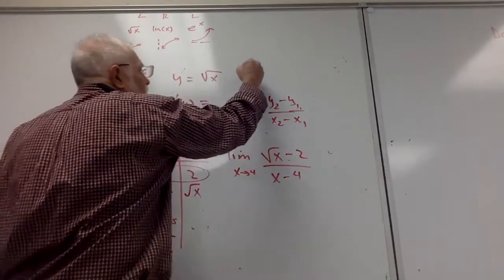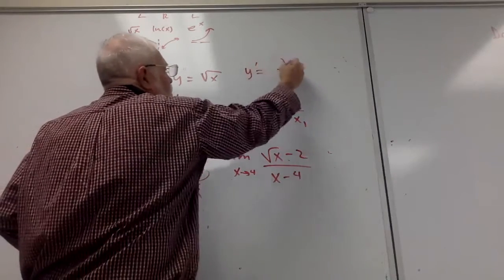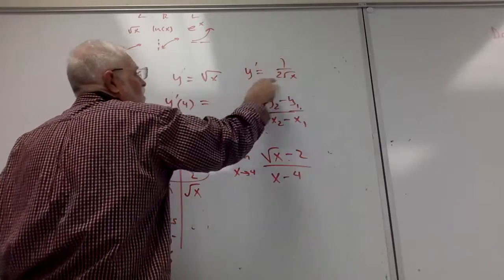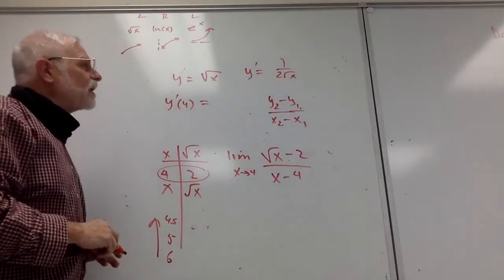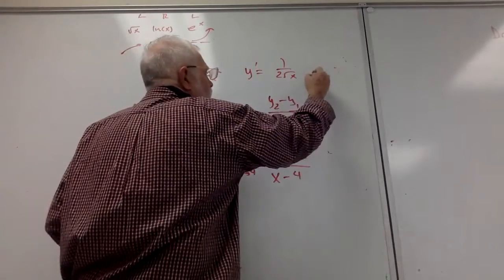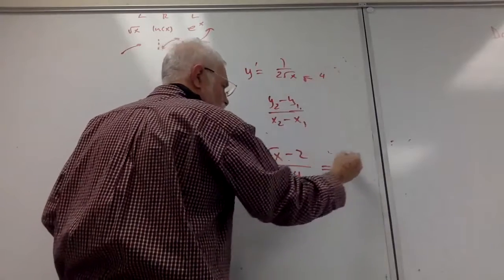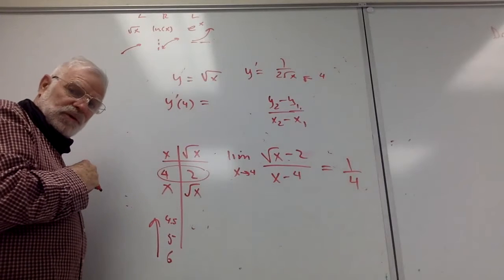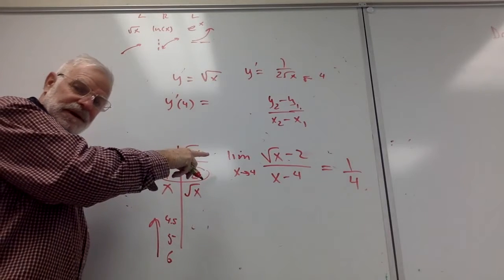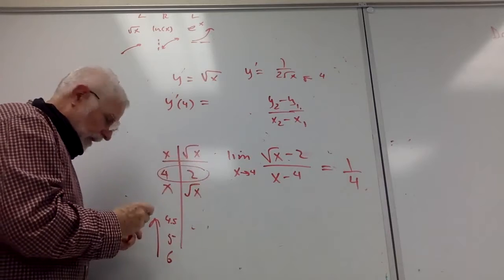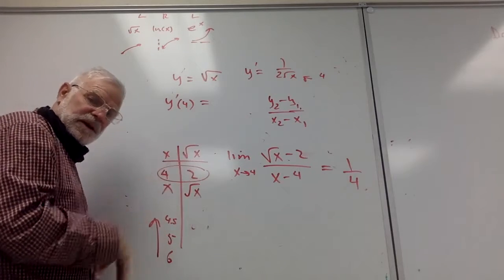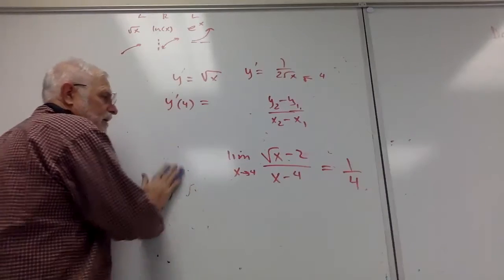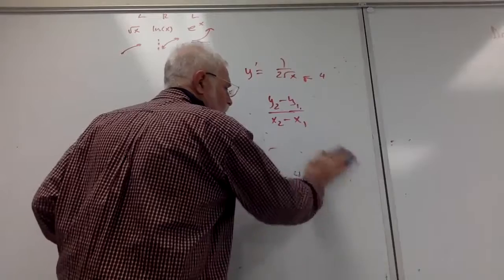I know y prime is 1 over 2 root x — the derivative of what's inside, which is 1, over 2 times the square root of what's inside. Plugging in 4, the answer is 1 fourth. It would be interesting to see if you remember how I showed you with conjugates — conjugating the numerator and denominator. We did that way back when.